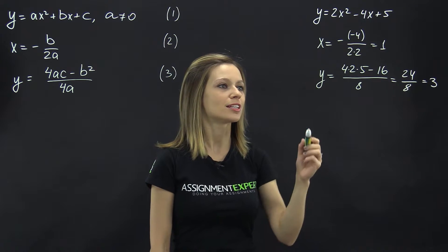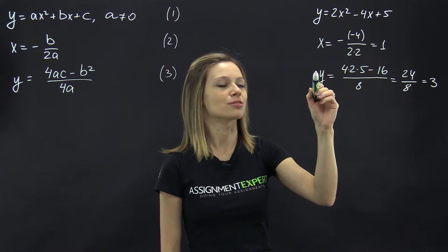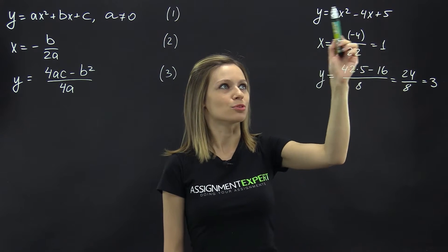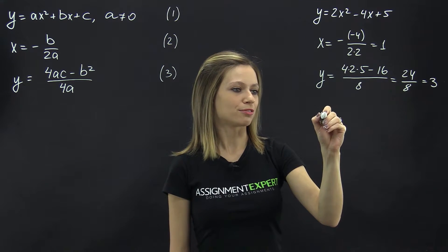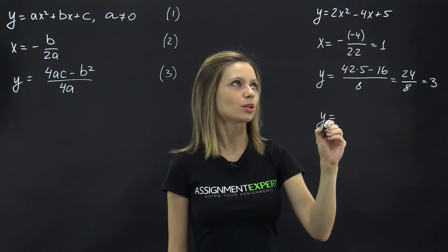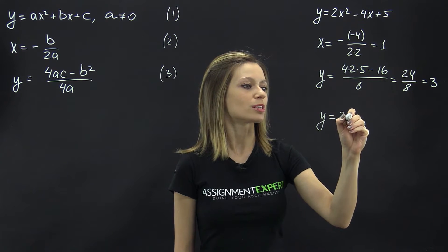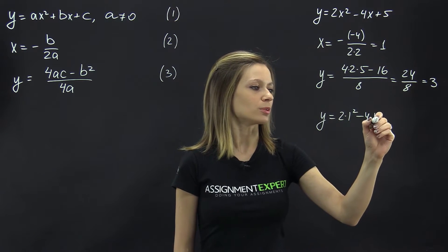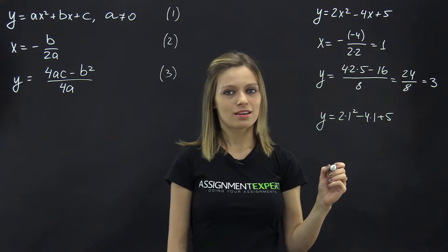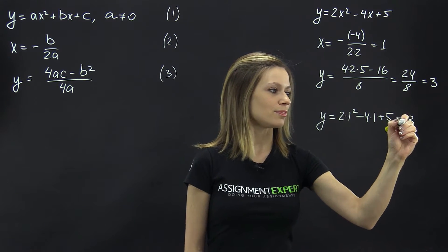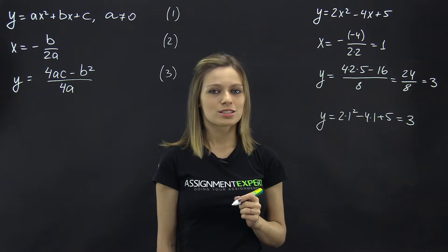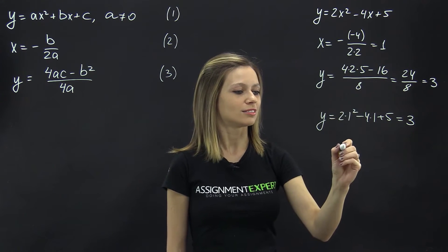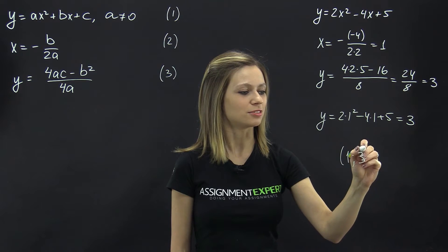Also, we could find the y coordinate of the vertex of this parabola by substituting x into the formula. So we have y equals 2 times 1 squared minus 4 times 1 plus 5, and that is equal to 3 as well. So the coordinates of the vertex of this parabola are (1, 3).